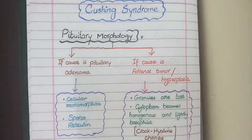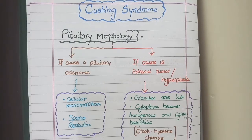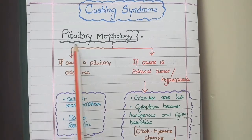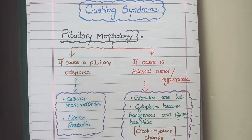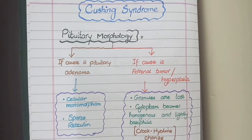We will discuss the morphology in Cushing syndrome. Cushing syndrome involves an interplay of two organs: the pituitary gland and the adrenal gland. We will first discuss the morphology of the pituitary in Cushing syndrome, and then discuss the morphology of the adrenal glands in Cushing syndrome.